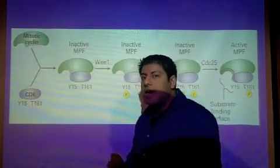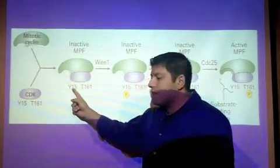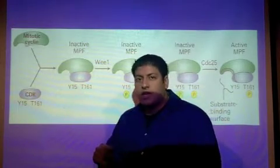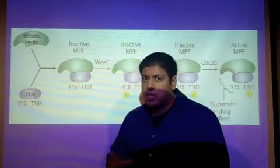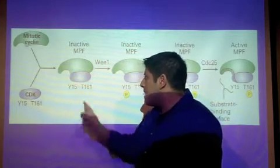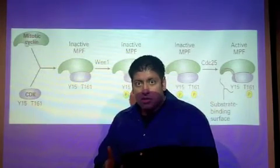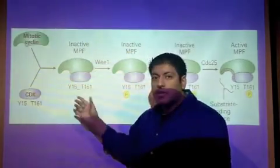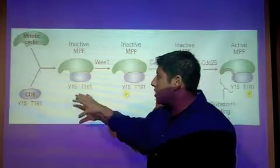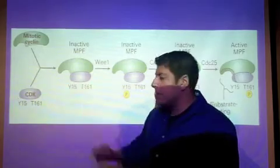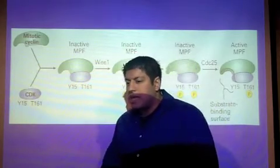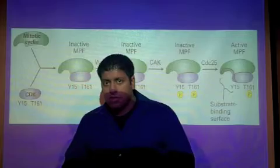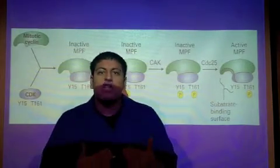What's unique about the CDK is that there are two specific amino acids, Y15 and T161. Y15 is tyrosine at the 15th position in the amino acid primary sequence, and T161 is threonine at the 161st amino acid position. Both the tyrosine and T161 are located and part of the CDK. Just because the cyclin and CDK have come together, this MPF is not activated yet.